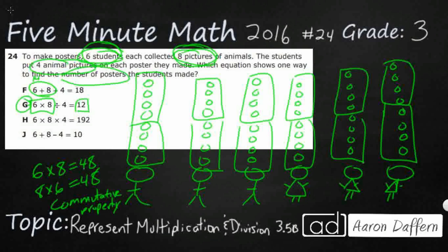H is kind of close because we are going to at least multiply 6 times 8, but instead of dividing by 4, they multiply by 4. So your answer is way too large. You're not going to make 192 posters. You need to put them in groups of four.